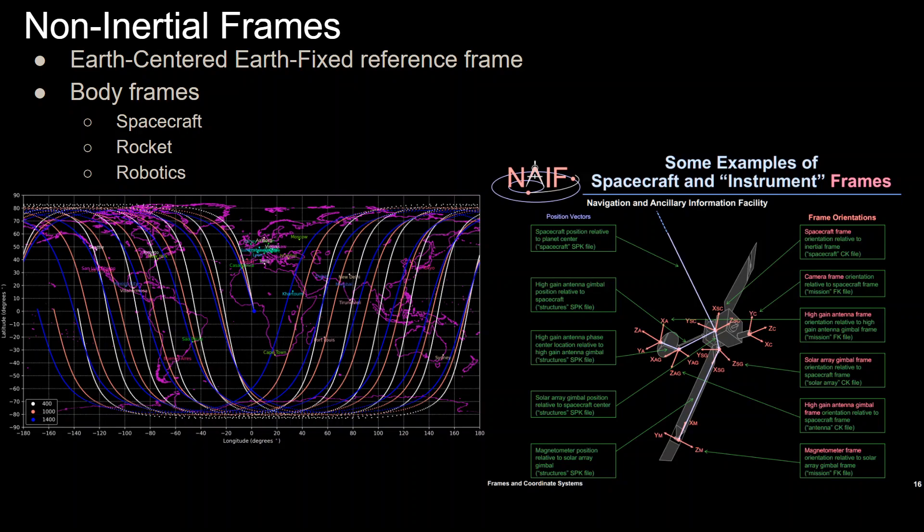There's other body frames that you can use. Obviously these are useful for spacecraft, rockets, robotics. Say you have a robot with an arm, you have multiple reference frames within that arm because you have separate joints.